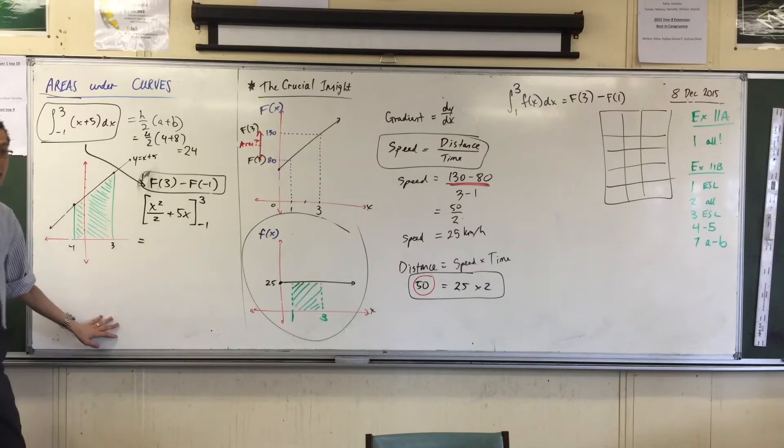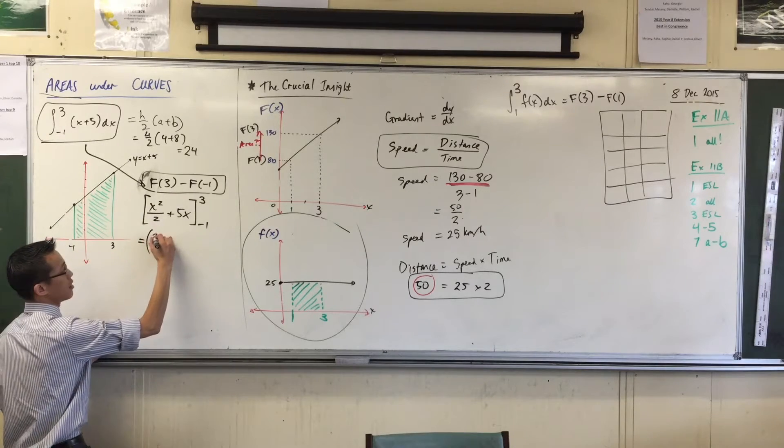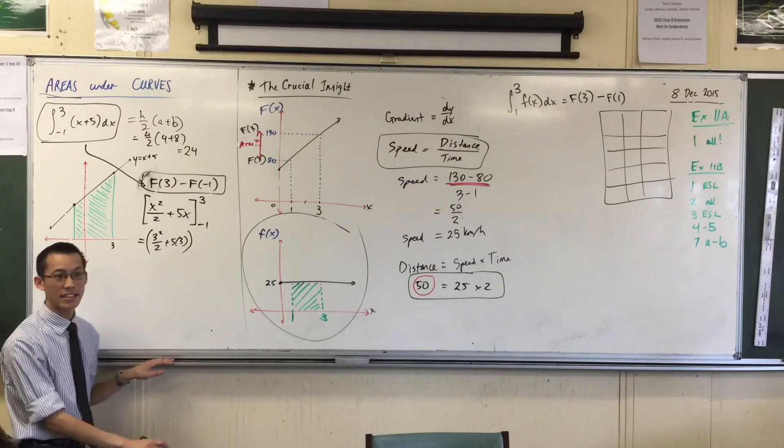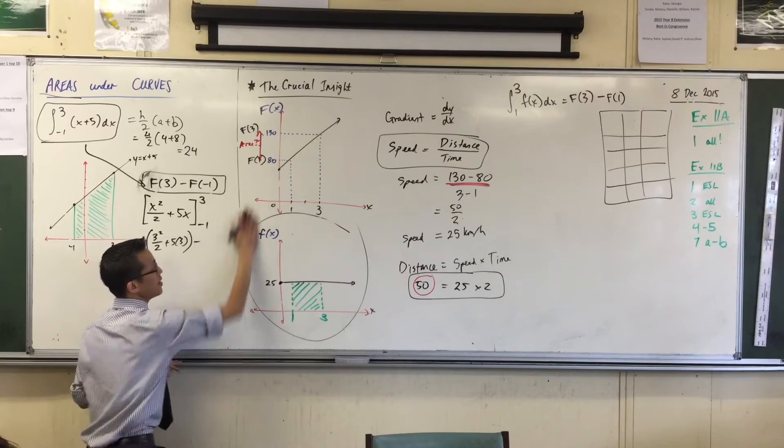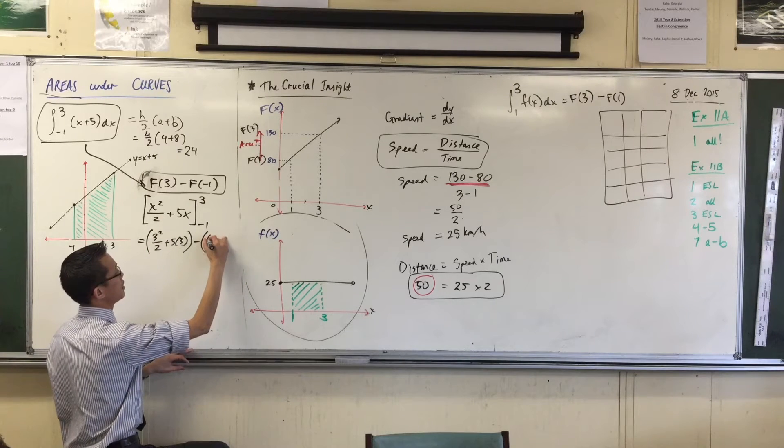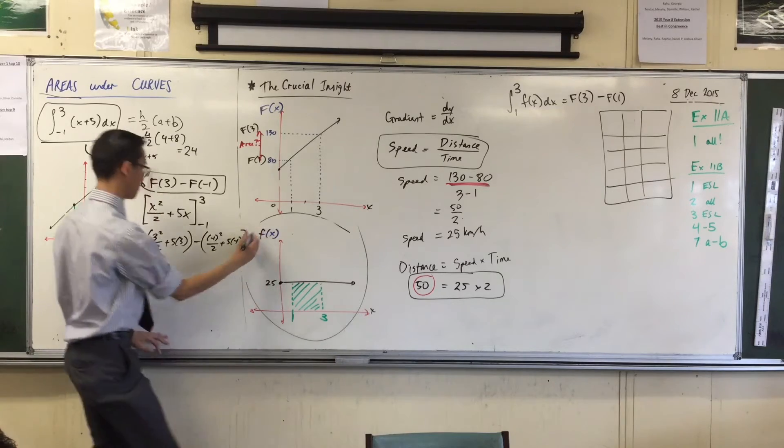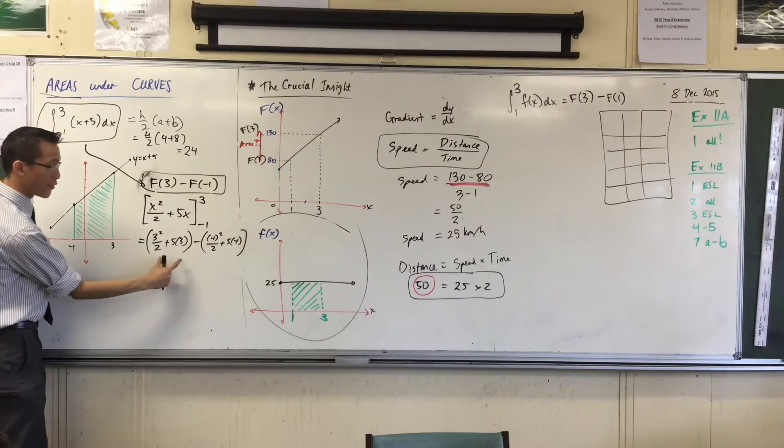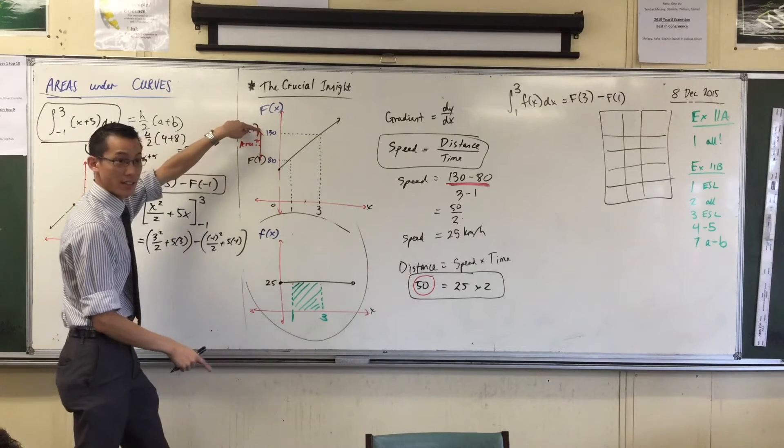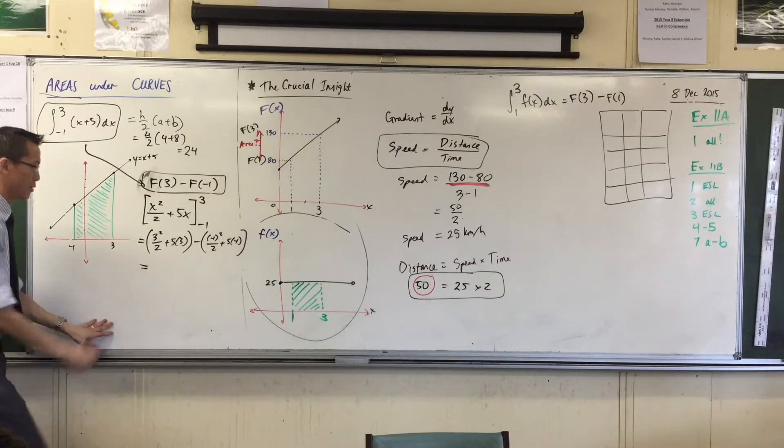So, now, I can write this line, right? This is my capital F, which is 3 squared on 2 plus 5 times 3. That's capital F of 3. And I take away capital F of negative 1. So that's going to be negative 1 squared, 5 lots of negative 1. Okay? That's F of 3. That's F of negative 1. Okay? That's where I ended. Take away where I started. You okay so far?